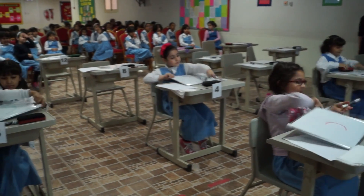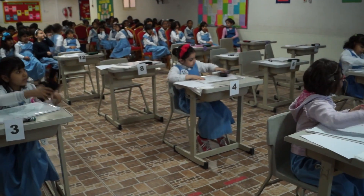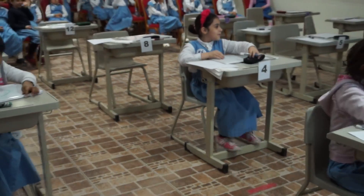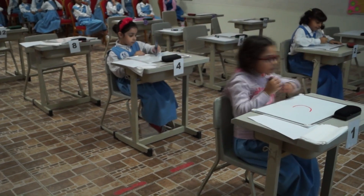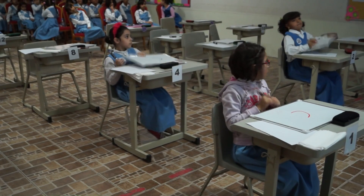Everybody's correct. Kindly use the letter, only the letter. Which number has a nine in the tens place and four in the ones place? Again: which number has a nine in the tens place and four in the ones place? A: 904. B: 409. C: 94. D: 49.